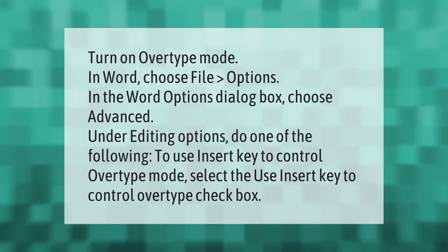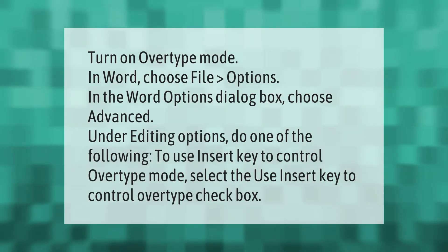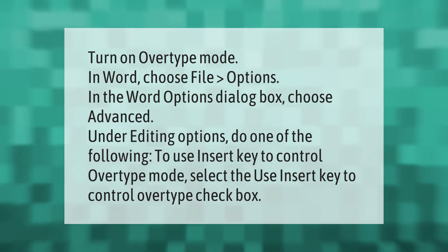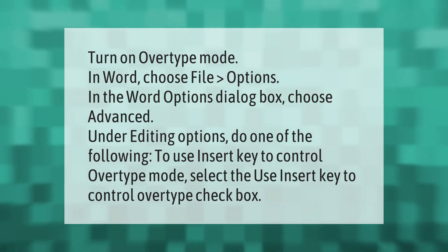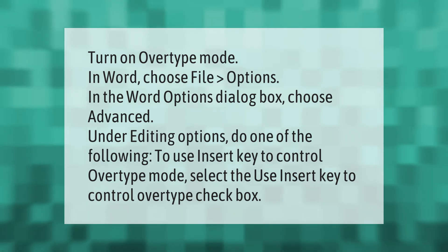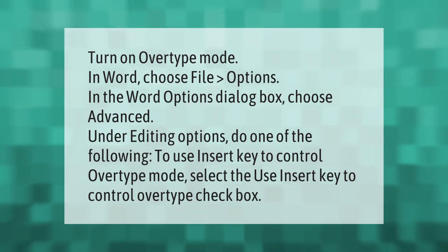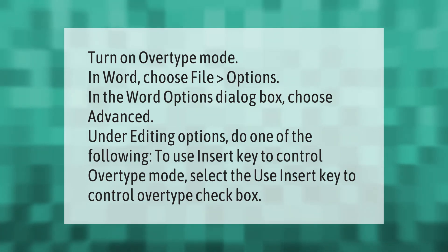To turn on overtype mode in Word, choose File, then Options. In the Word Options dialog box, choose Advanced. Under Editing Options, to use the Insert key to control overtype mode, select the 'Use Insert key to control overtype' checkbox.